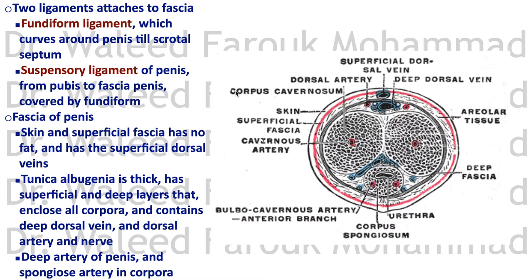Two ligaments attach the penis: the fundiform ligament, which we discussed with the anterior abdominal wall, as well as the suspensory ligament of the penis, running from the pubis to the fascia of the penis and covered by the fundiform ligament.